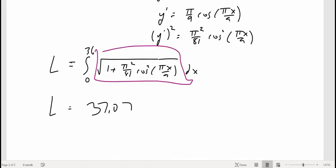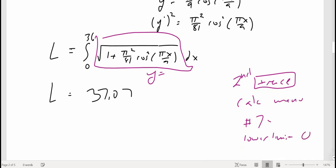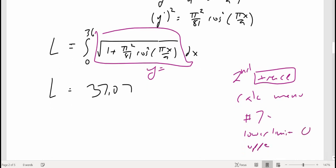So this piece is the y equals, and then to do the integral, just do second trace, and that'll take you to the calc menu, and then choose number seven, and then you put in the lower limit is zero, and then the upper limit would be the 36 in this case.